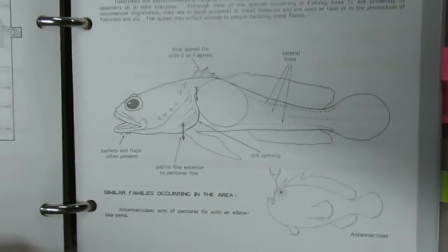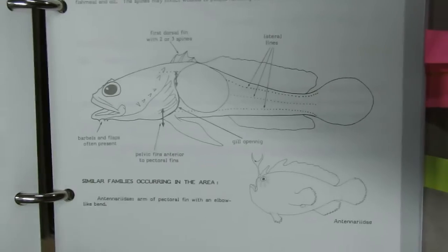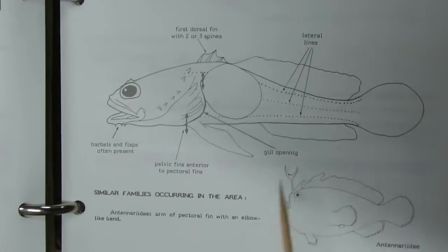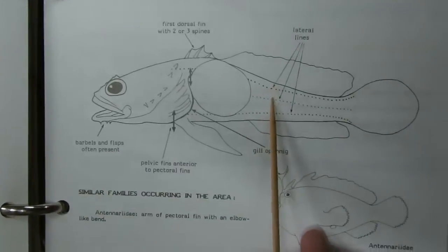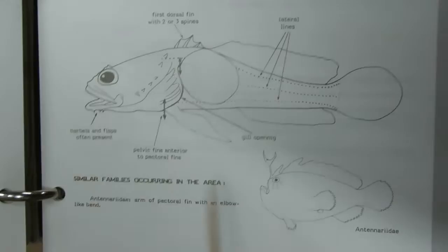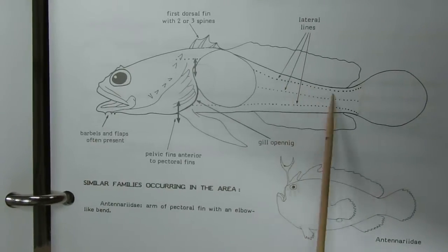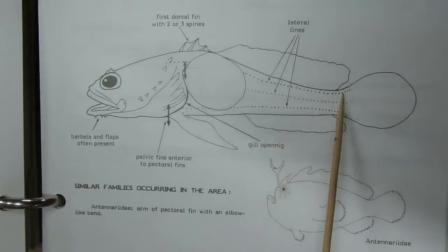Next is Batrachoididae. Three lateral lines run along the side of the body, represented by a series of small bifid tentacles.